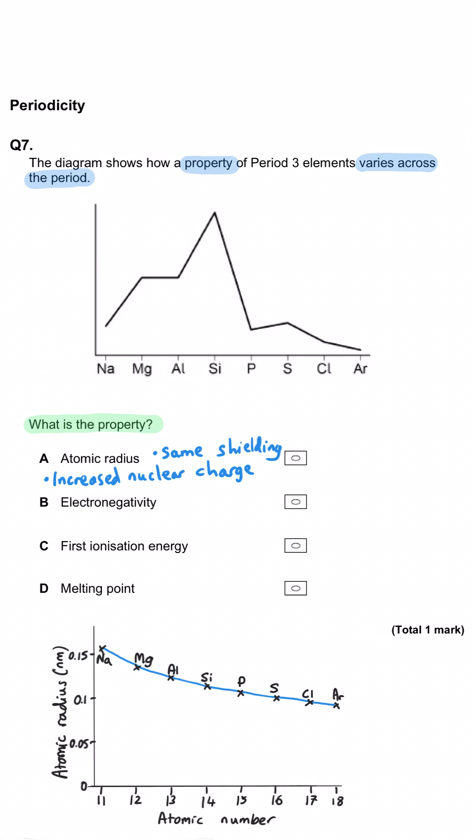Atomic radius. No, atomic radius goes down as we work our way across the period because of increased nuclear charge and the same shielding.